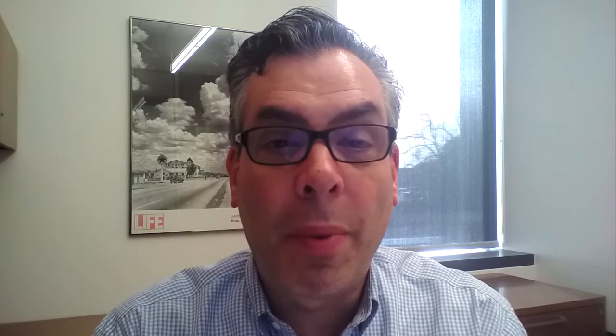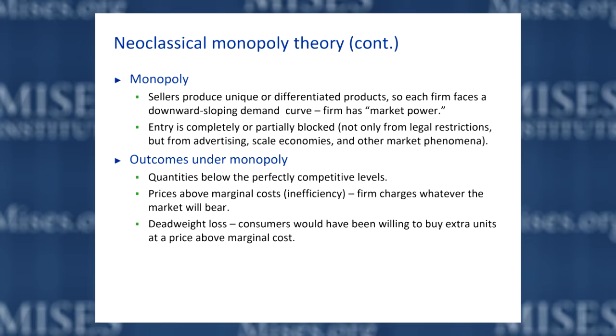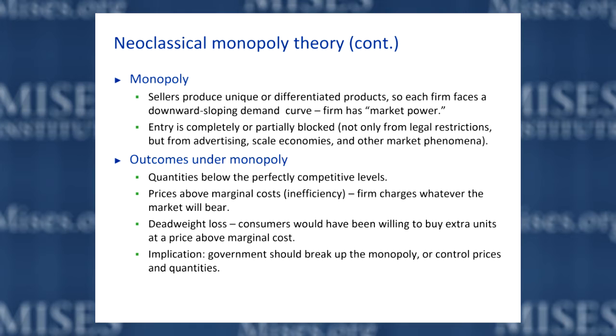The result is so-called deadweight loss — a supposed inefficiency in that consumers might have been willing to pay for extra units of the good at a price above marginal cost, but the seller refuses to sell these units because that would reduce the seller's total profit. So the implication is that the government should step in and break up monopolies or force them to charge prices and produce quantities more like what you would get under perfect competition.